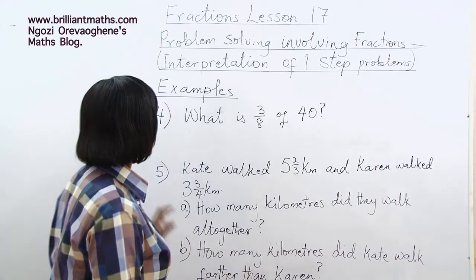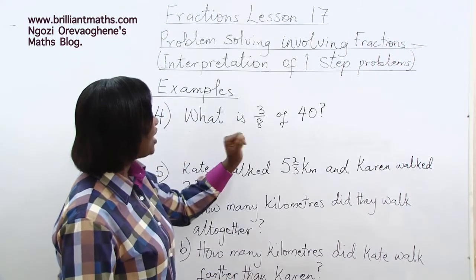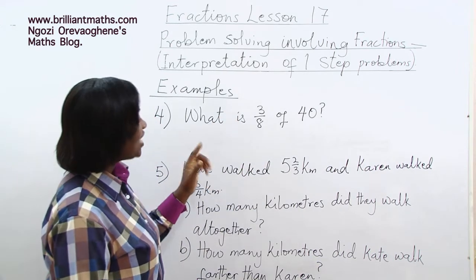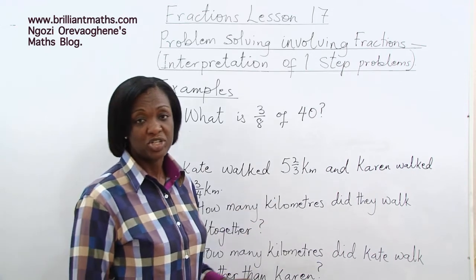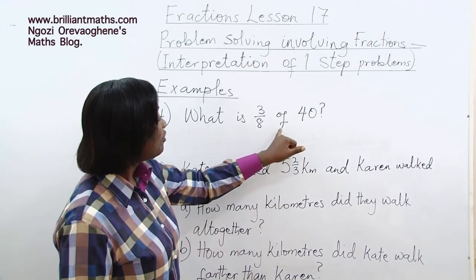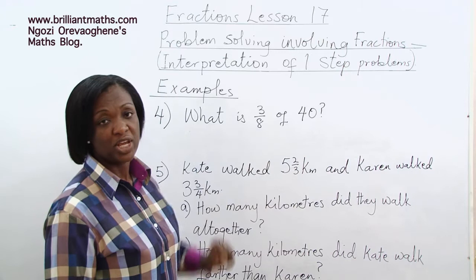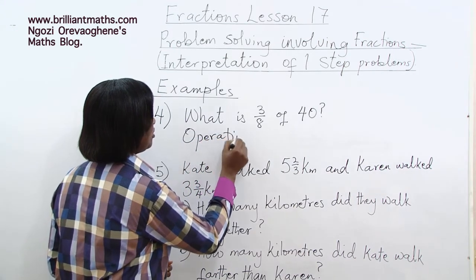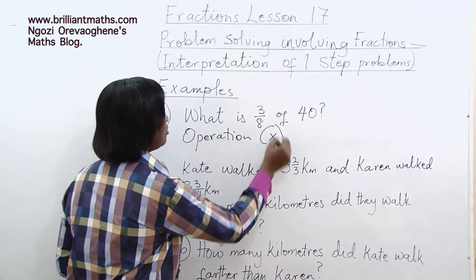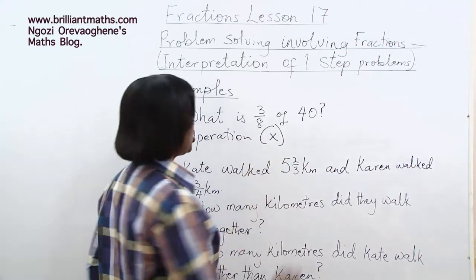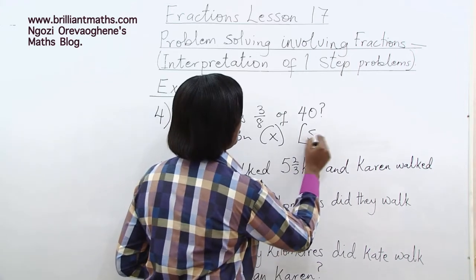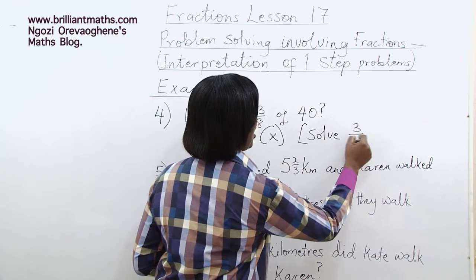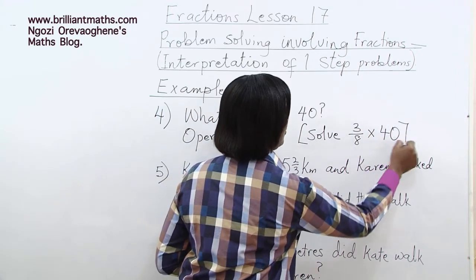Example four: What is three-eighths of forty? The word 'of' stands for multiplication. So the operation is multiplication. Pause the video and solve three-eighths times forty.